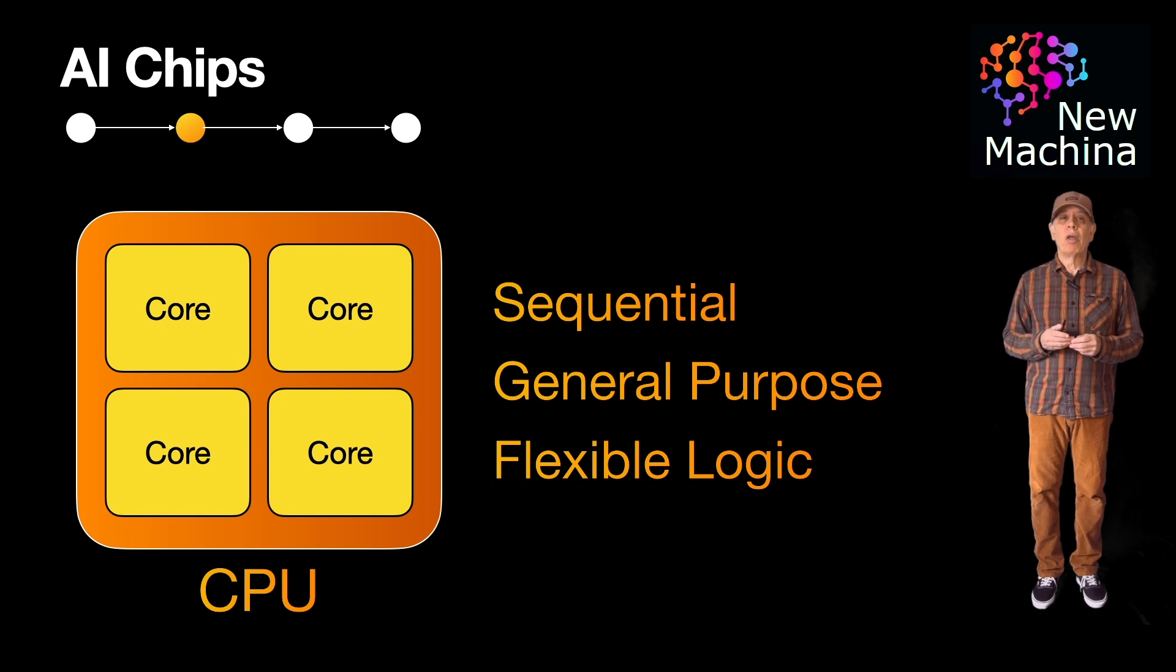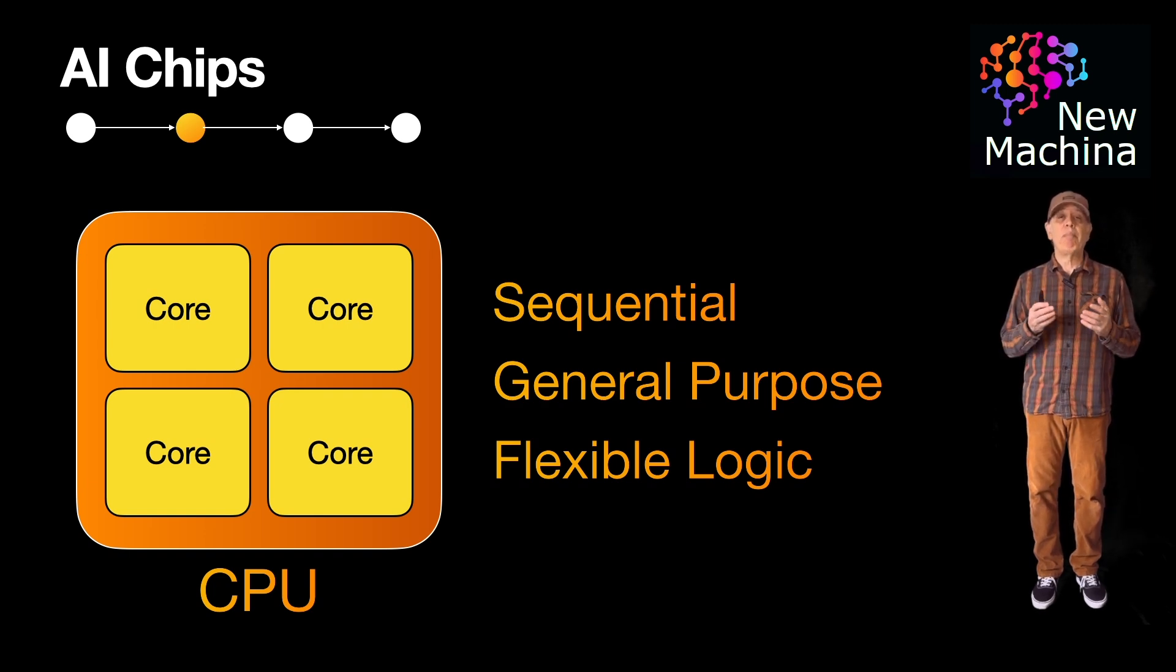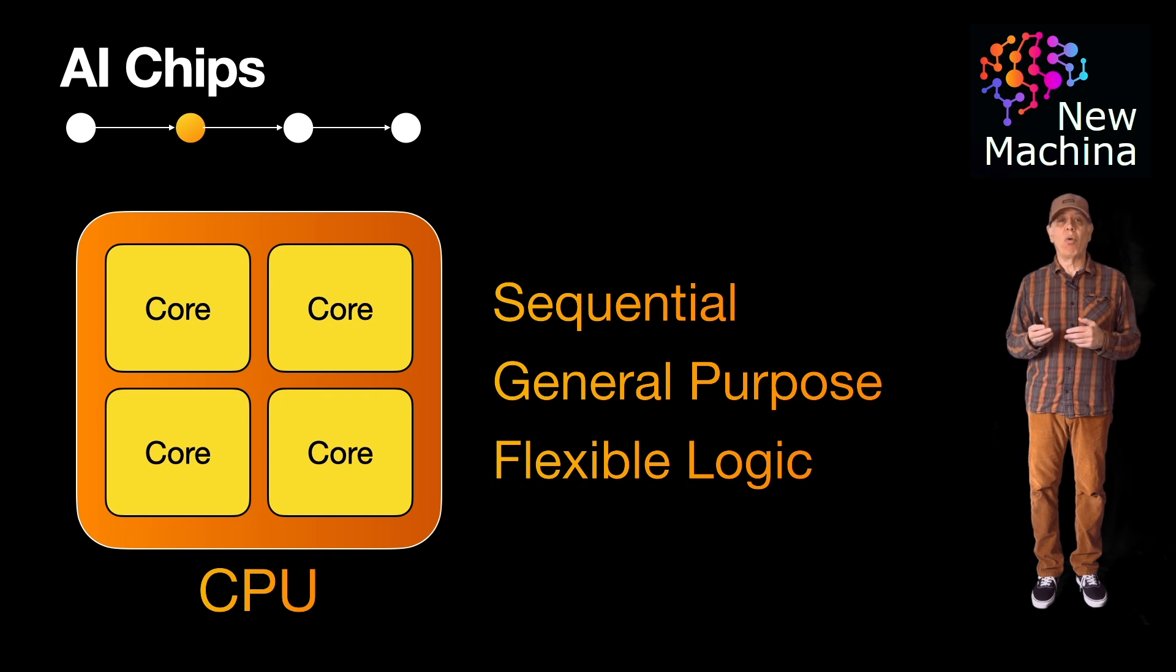So what's a core? Well, a core is a processing unit that can independently execute machine language instructions. A CPU core contains general-purpose instructions such as arithmetic, logic, control flow, and memory access. For those of you who might have taken an assembly language class sometime in your life, you might recognize examples such as add, subtract, multiply, divide, jump, call, load, and store.